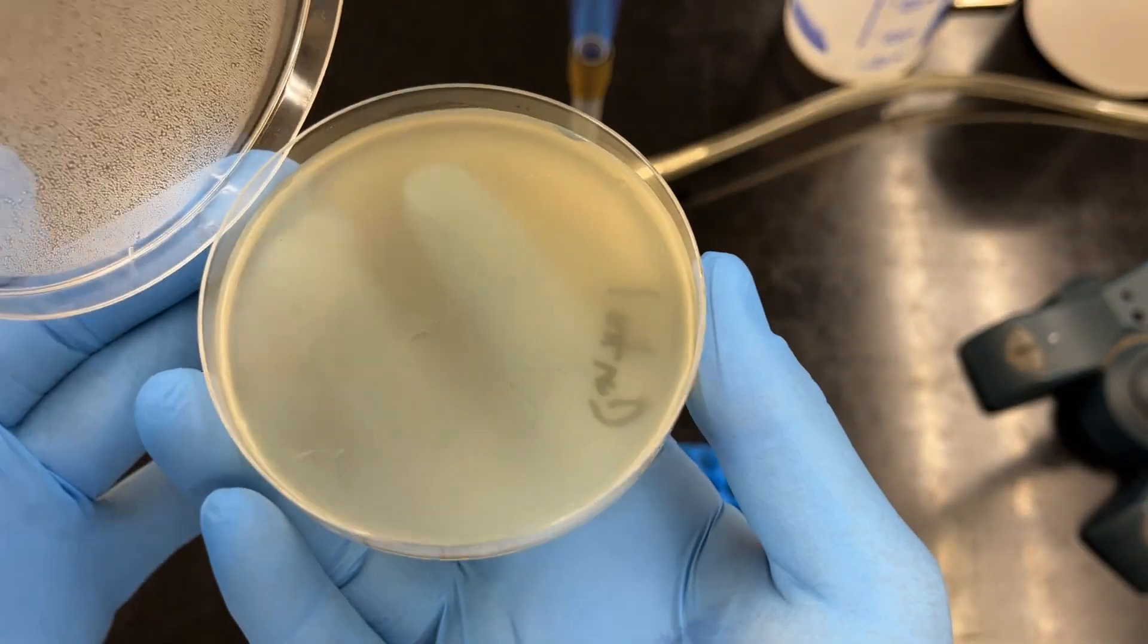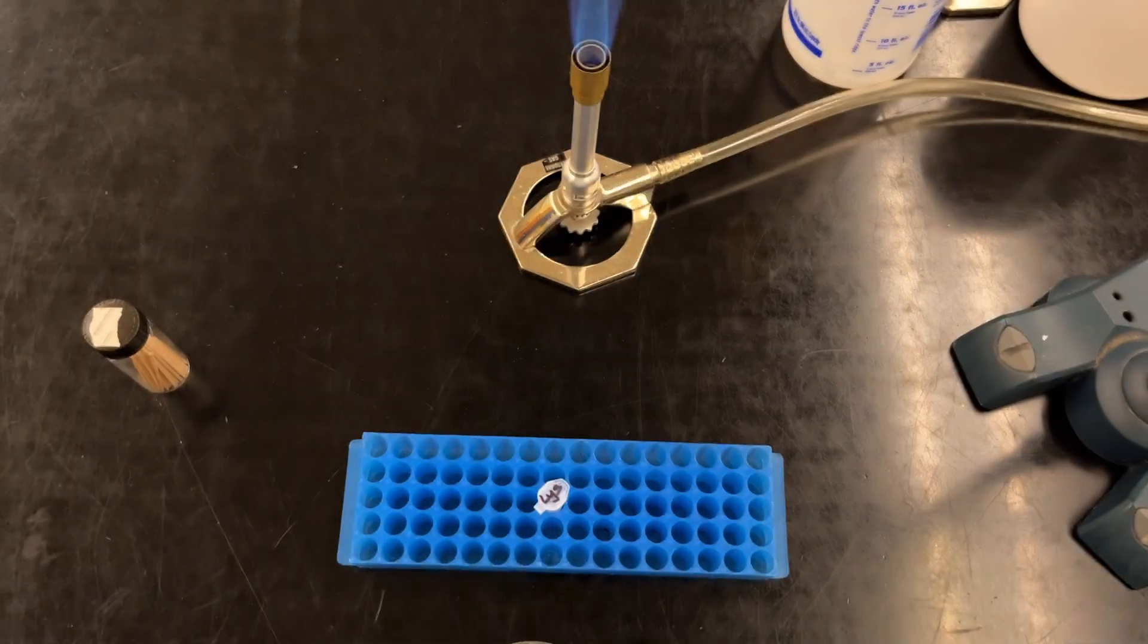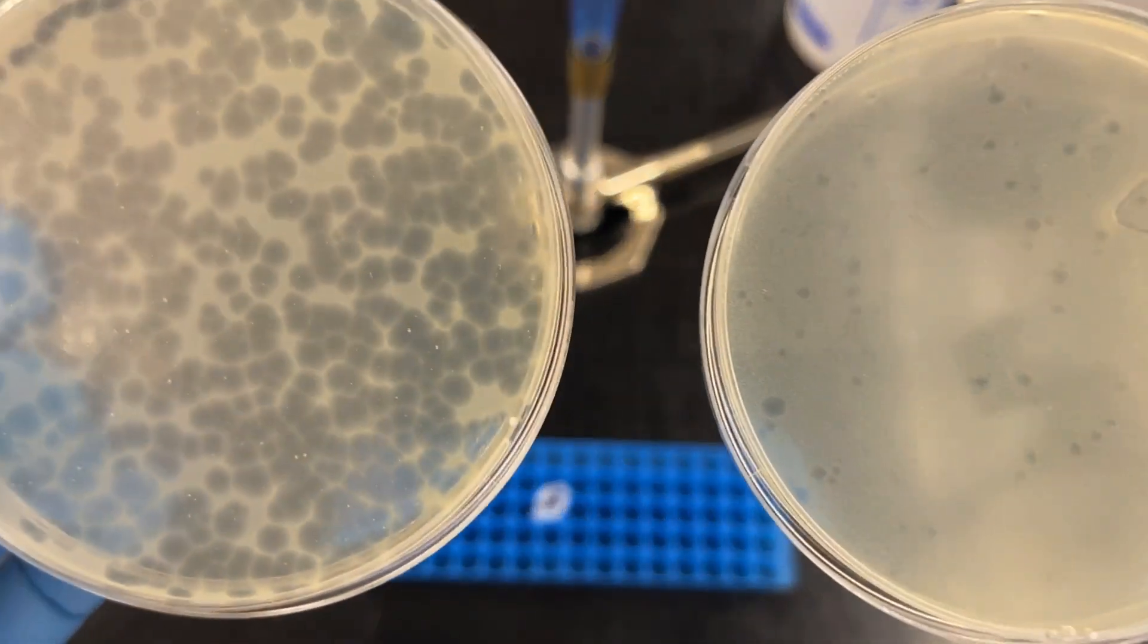So here is a lawn of a bacterium without any phage. And when we add phage to it that can infect this bacterium, this is what we see.